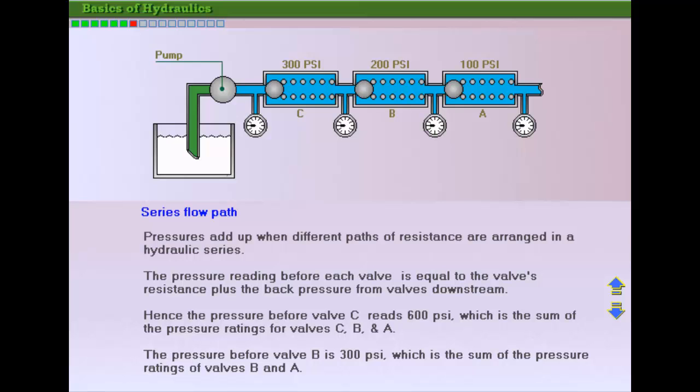Fluid begins to flow through the system. The pressure gauges before each valve show the pressure reading to be equal to the resistance of that valve plus the back pressure from valves downstream.